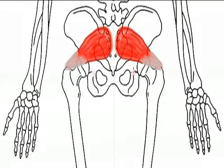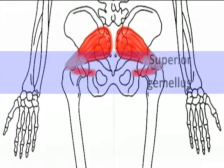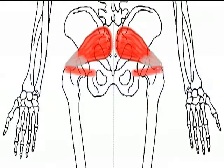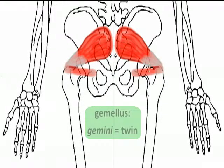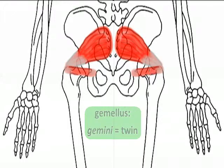Our next muscle is the superior gemellus, and this is a thin belt-like muscle that is a twin to the inferior gemellus. The name gemellus means twin after the word gemini, so this is a good way to remember this twin pair of muscles.